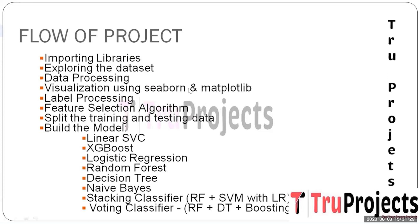The next step is visualization using Seaborn and Matplotlib. These libraries are employed to create visual representations of the dataset, offering insight into data distribution patterns and potential correlations. The following step is label processing, where target variables are processed to ensure compatibility with the chosen machine learning algorithm. Then a feature selection algorithm is utilized to identify and retain the most relevant attributes from the dataset, enhancing model efficiency and accuracy.